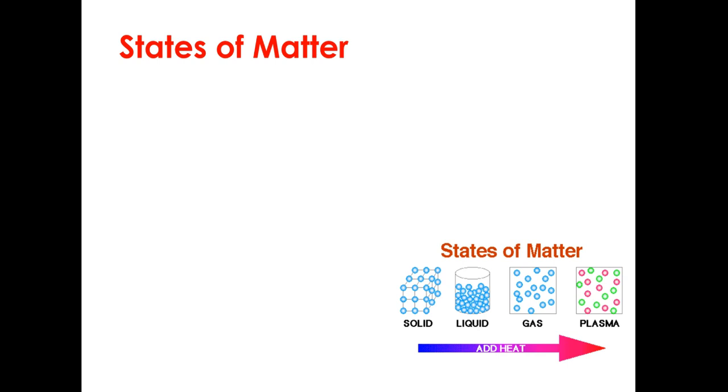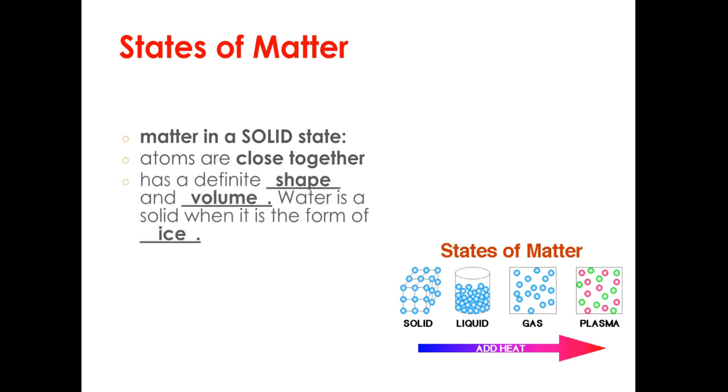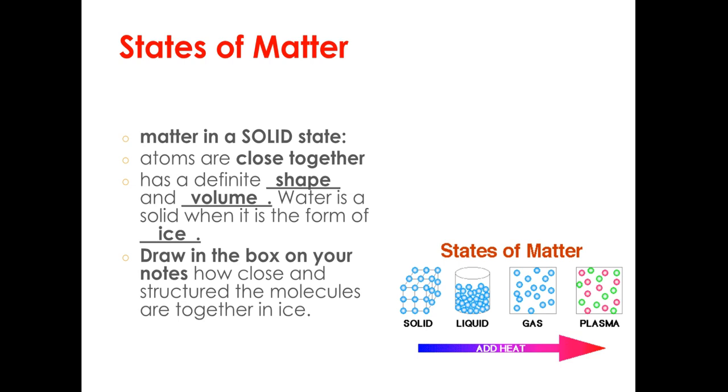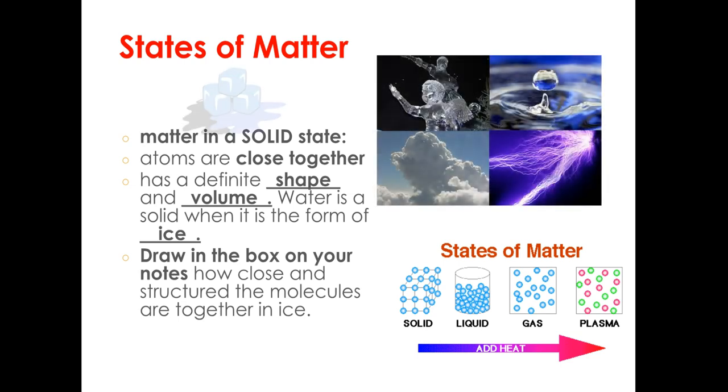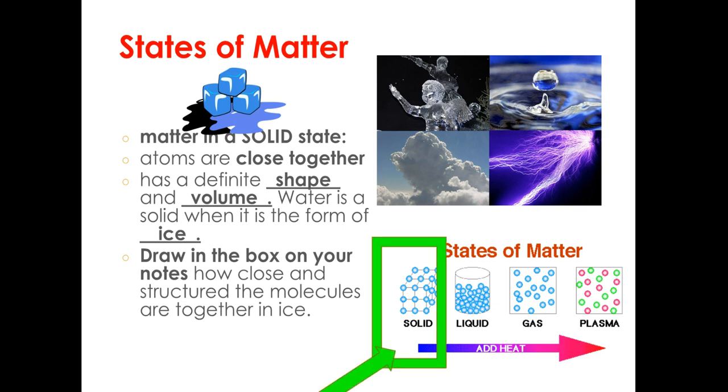So let's review the states of matter. I know this is something we talked about in sixth grade, so I'm just going to touch upon it briefly, but it's really, really important to know. When matter is in a solid state, the atoms are really close together. Matter in a solid state has a definite shape and a definite volume. Think about an ice cube. It has that definite cube-like shape. And we can even measure its volume by measuring the length, the width, and the height. We have a definite volume. Water is solid when it's in the form of ice. On your notes, there is a box. It says matter in a blank state. Let's start with solid. Make sure you draw a picture of this arrangement of molecules. The matter in a solid state.